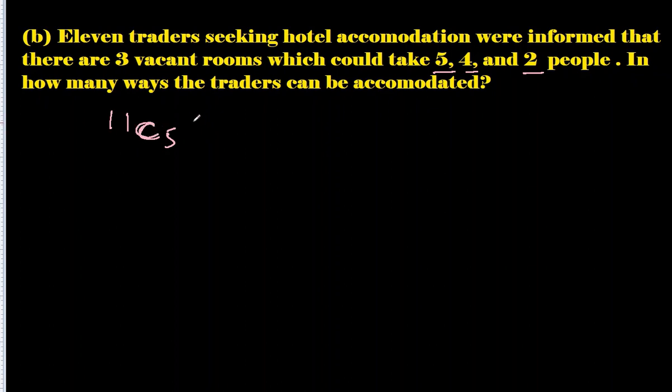That's why we are using combination. Then remaining are six, five are selected. So remaining are six, out of those six we have to select four people, and then finally two people are remaining. We will choose two out of them.